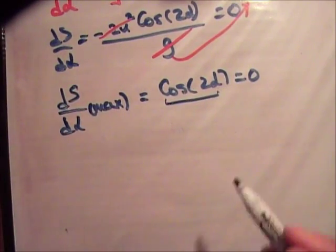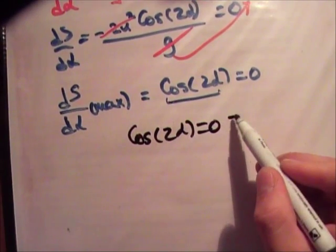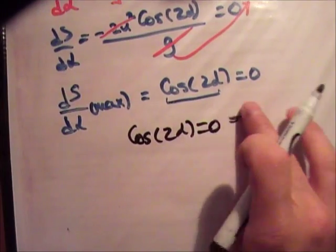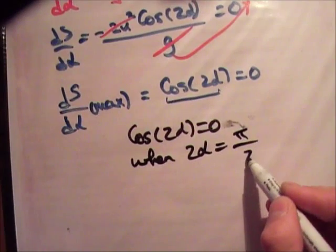That cos alpha, cos 2 alpha, is equal to 0. Is equal to when 2 alpha, let's say, when 2 alpha is equal to pi over 2.